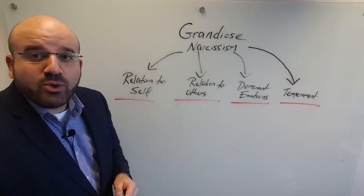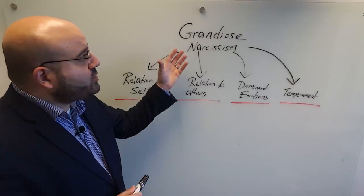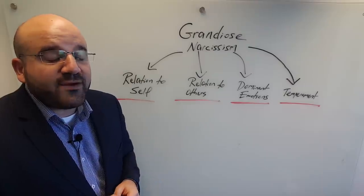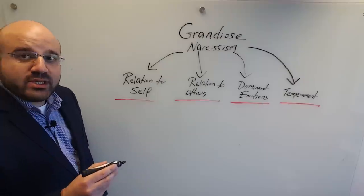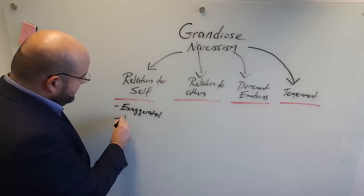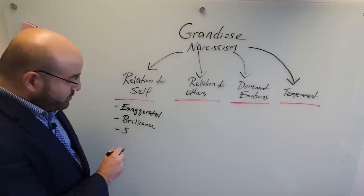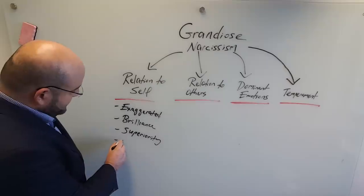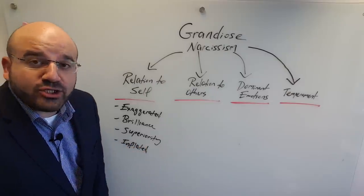In terms of the grandiose or overt narcissist — also called oblivious narcissism, because this is the narcissistic individual who is oblivious to the effect and impact they have upon others, and really lacks self-awareness — the relation to the self involves an exaggerated sense of self-importance, the belief in their brilliance, the belief in their superiority. There is an ego inflation, an inflated sense of self, an inflated relationship and infatuation with the self.